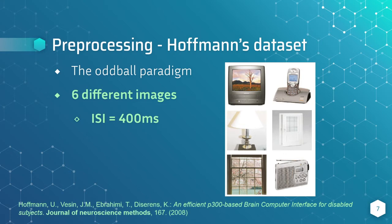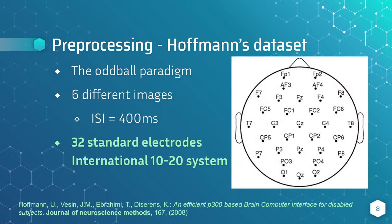The dataset contains EEG signals corresponding to the answer of 8 users to random image sequences of six different images with an interstimulus interval of 400ms. Each flash of an image lasted for 100ms, and in the last 300ms, the user waits for the next image. The EEG signals in the dataset were recorded from 32 electrodes at the standard positions of the 10-20 international system.